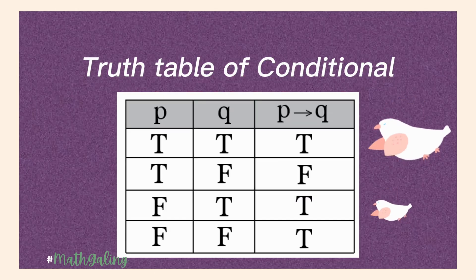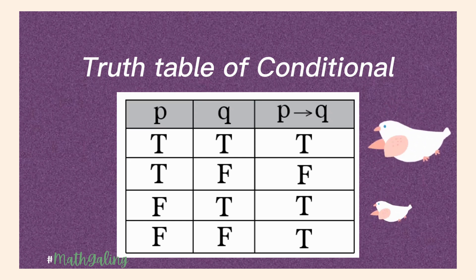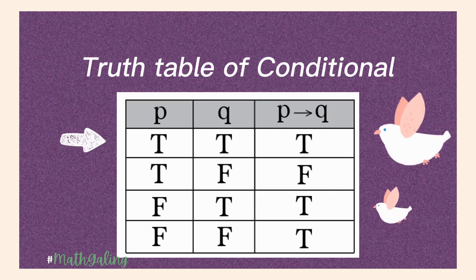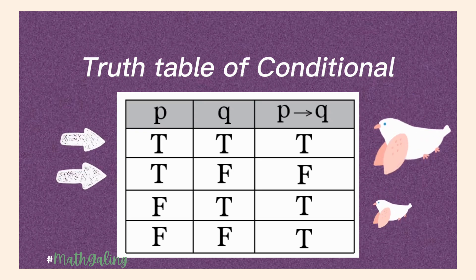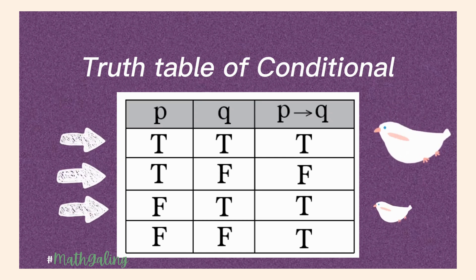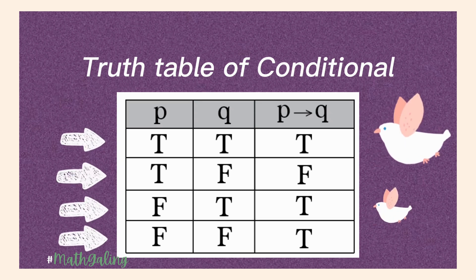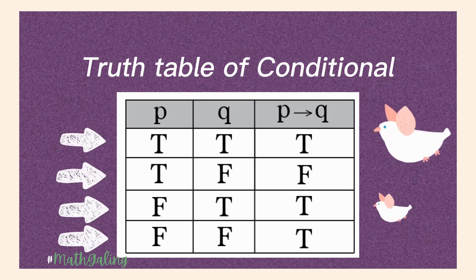Truth Table for Conditional. We know that conditional uses an if-then statement. First case: if the first proposition is true and the second proposition is true, the value is also true. Second: if the first proposition is true and the second is false, the value is false. Third: if the first is false and the second is true, the value is true. Last: if the first is false and the second is also false, the value is true.